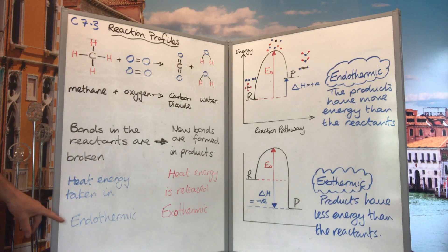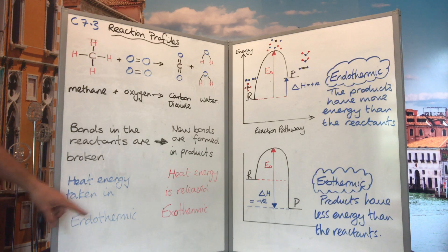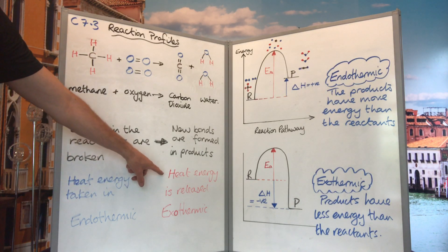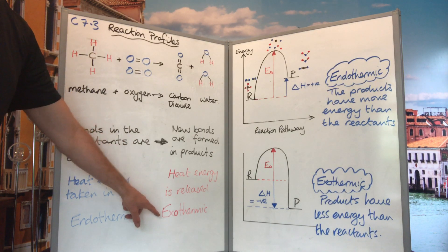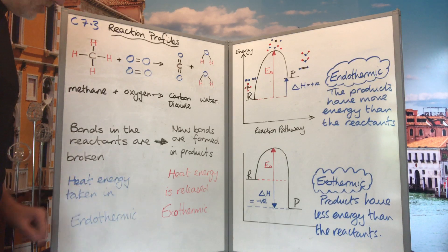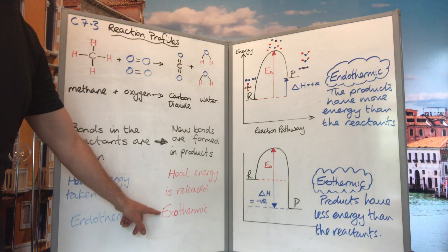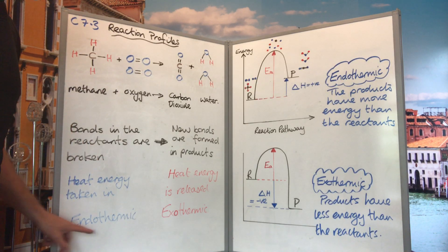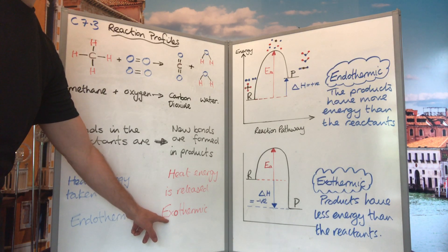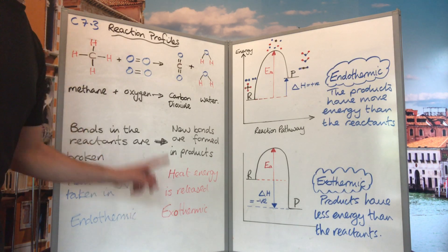To break those bonds we need to put heat energy in, so this process is endothermic — heat energy goes in, it enters. Whereas when new bonds are formed, heat energy is released, so this is an exothermic process. For every single reaction you will have an endothermic process and an exothermic process.